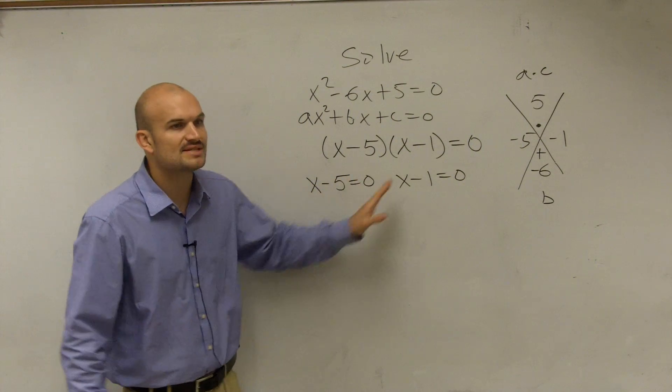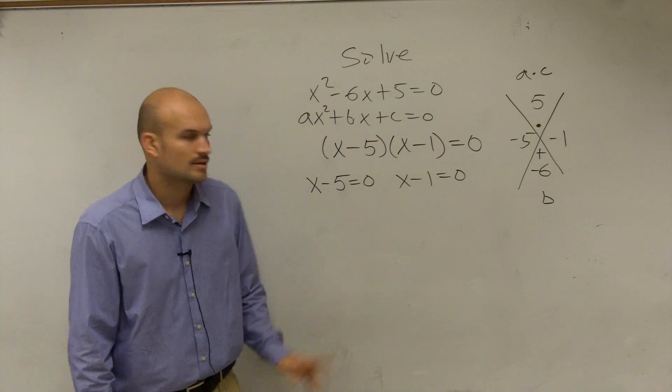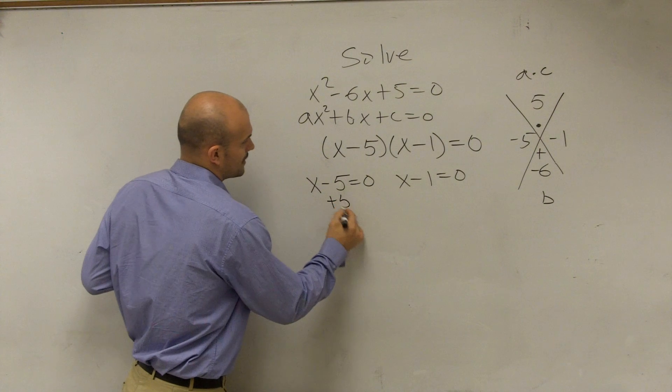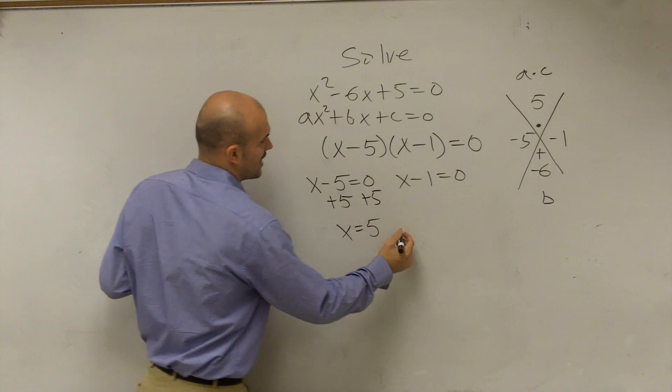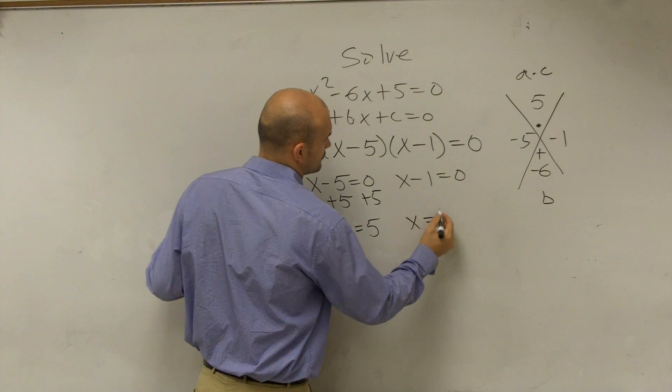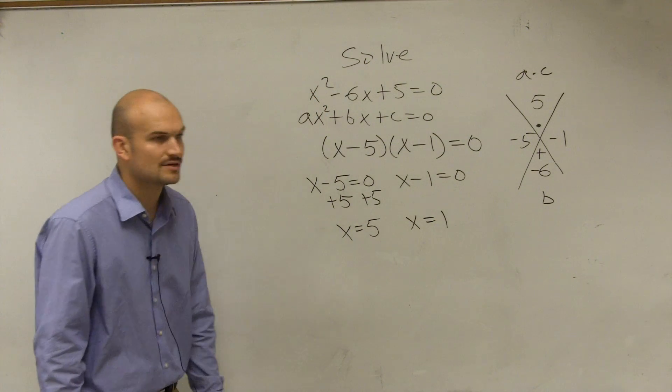So what I do is I write them, set them both equal to 0. And then let's solve. Plus 5. So therefore, I solve x equals 5. And we also get x equals 1.